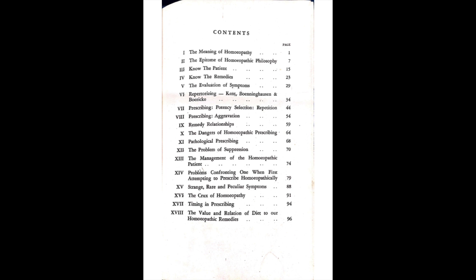Chapter 9 - Remedy Relationships, Chapter 10 - The Danger of Homeopathic Prescribing, Chapter 11 - The Pathological Prescribing, Chapter 12 - The Problem of Suppression, Chapter 13 - The Management of Homeopathic Patient, Chapter 14 - Problems Confronting One When First Attempting to Prescribe Homeopathically, Chapter 15 - Strange, Rare and Peculiar Symptoms, Chapter 16 - The Crux of Homeopathy, Chapter 17 - Timing in Prescribing, Chapter 18 - The Value and Relation of Diet to Our Homeopathic Remedies. Chapter 1: The Meaning of Homeopathy.